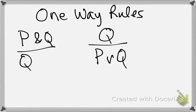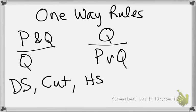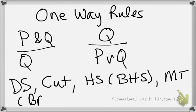So from our derived rule set, we have a number of rules that only go one way. So disjunctive syllogism, the cut rule, hypothetical syllogism, and also biconditional hypothetical syllogism, and modus tollens, and biconditional modus tollens.